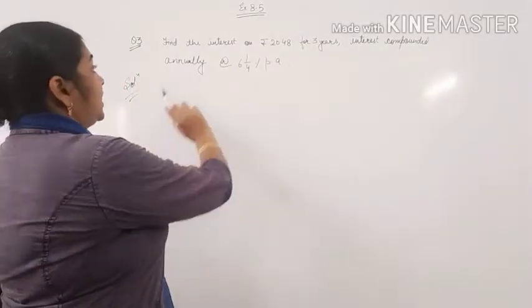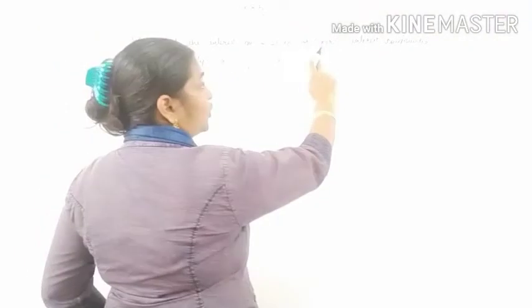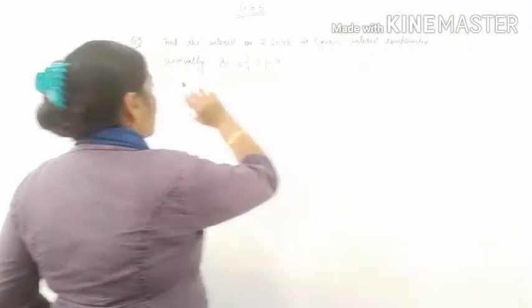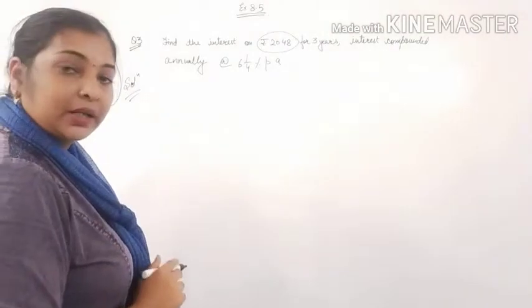See in question number 3, find the interest on Rs. 2048 for 3 years, interest compounded annually at the rate of 6 and 1/4% per annum.